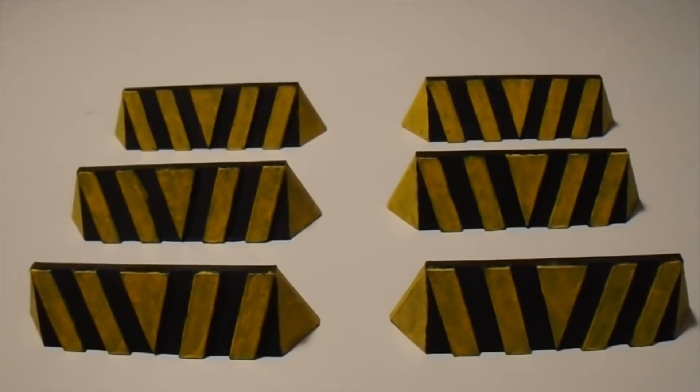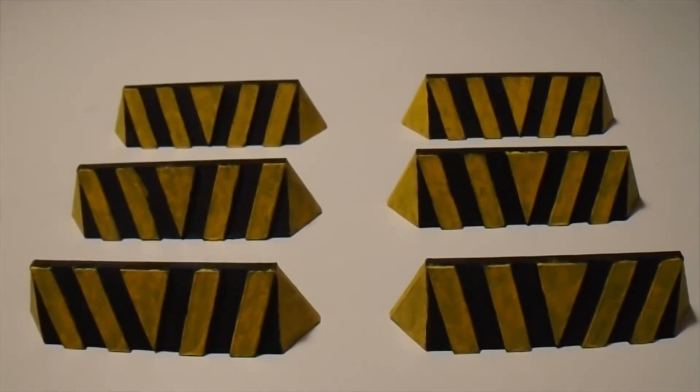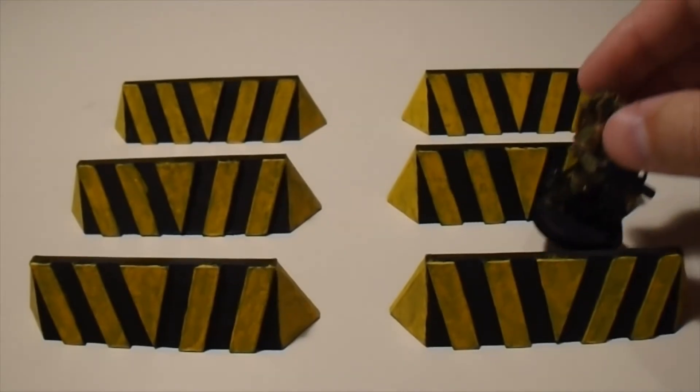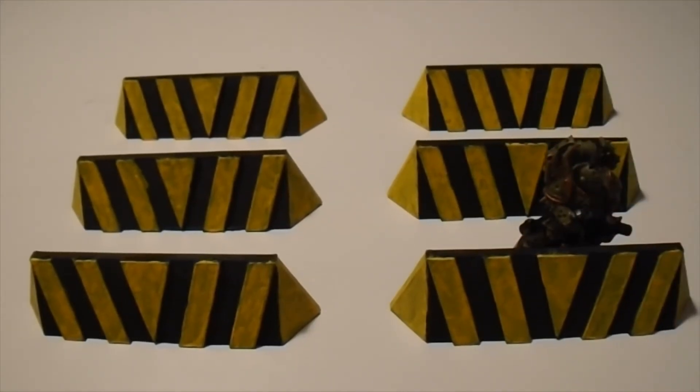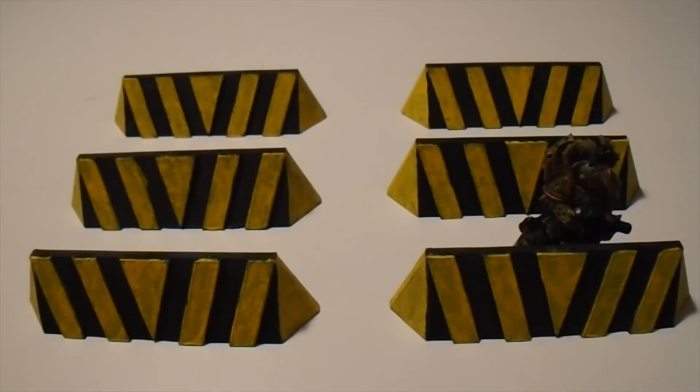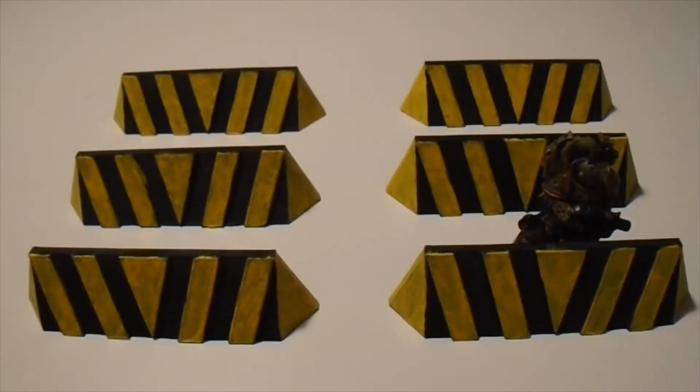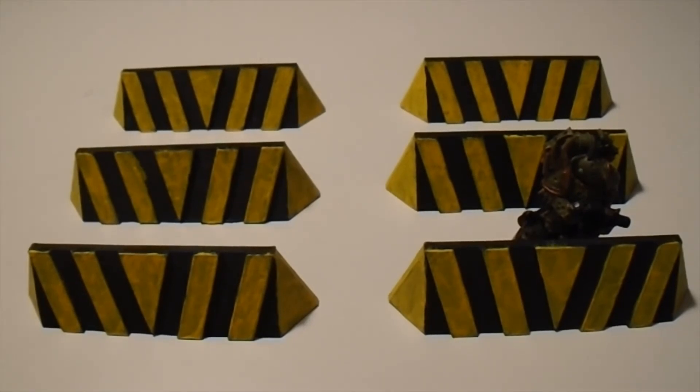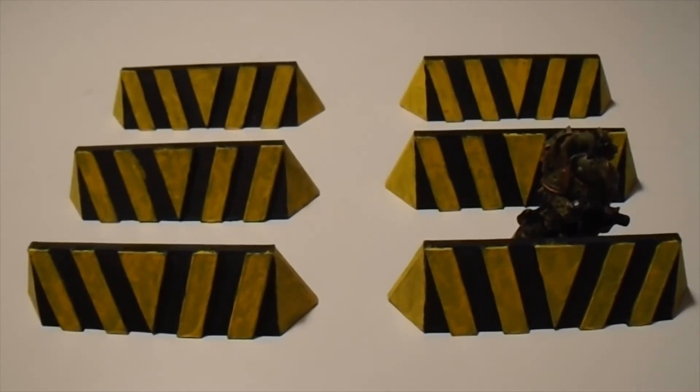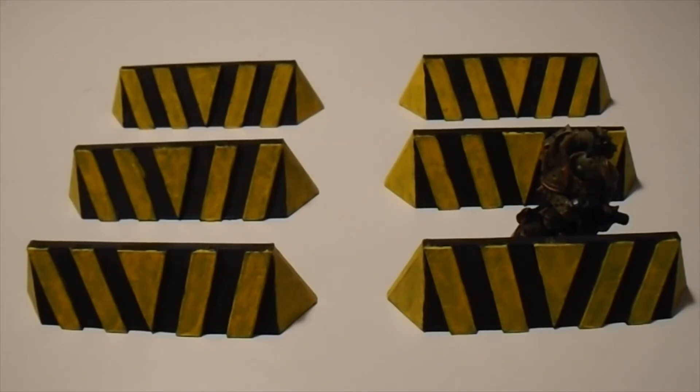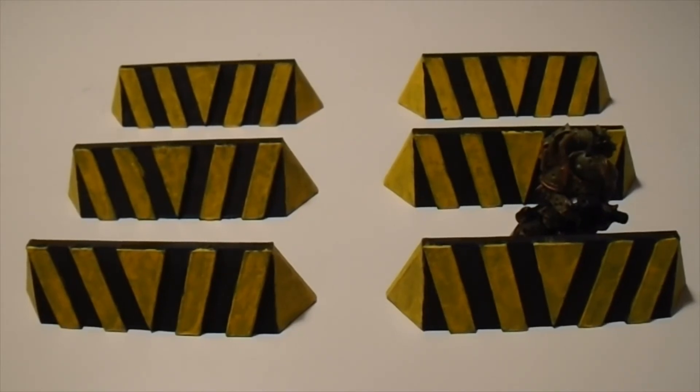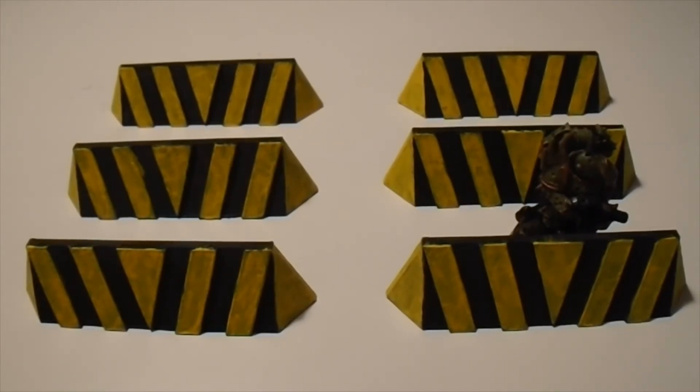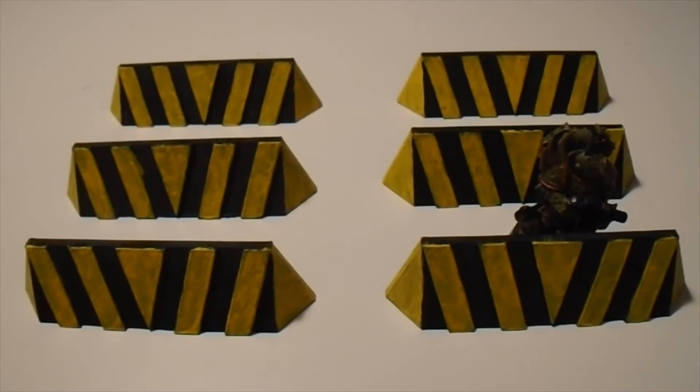These barriers are also a decent size to use in Warhammer 40,000. For example, if I put my Plague Marine behind, it goes roughly halfway up the model. Which is great for acting as something your troops can hide behind while still giving them a bit of cover, especially if you're using smaller models like the Chaos Cultists, Pox Walkers, or even Imperial Guard.